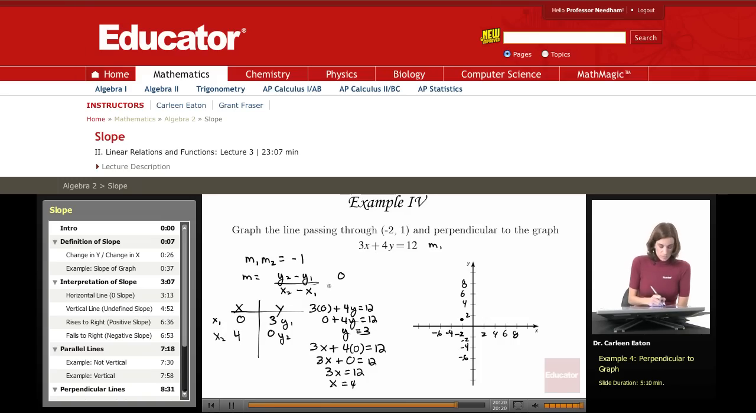y2 is 0, y1 is 3. So 0 minus 3 over x2, which is 4, minus 0. I've found m1. I've found the slope of this line.